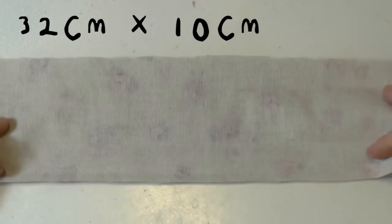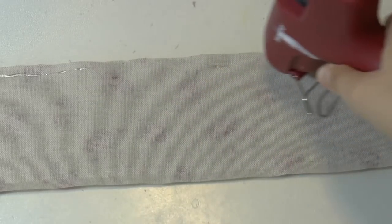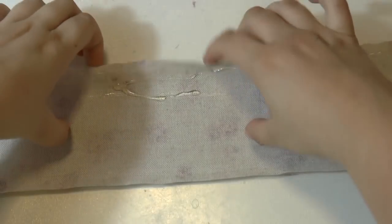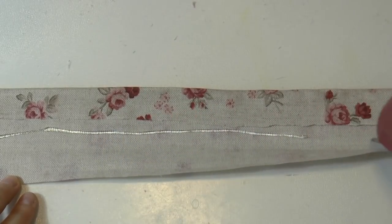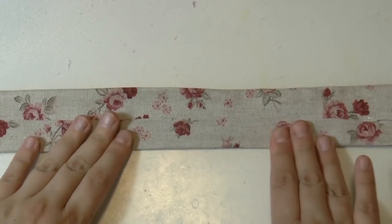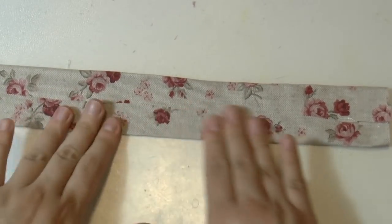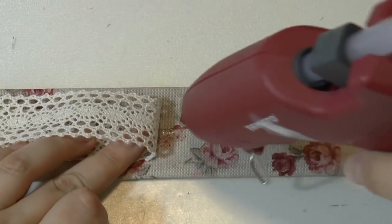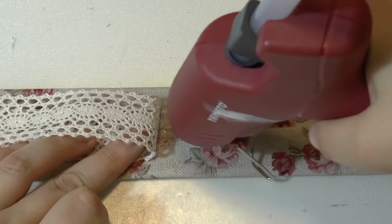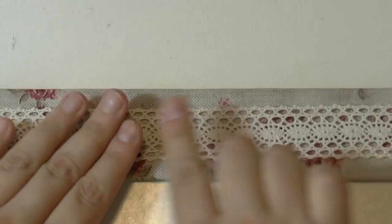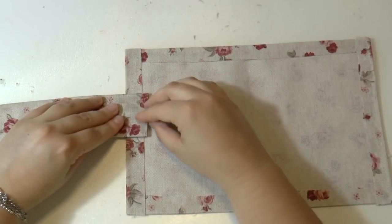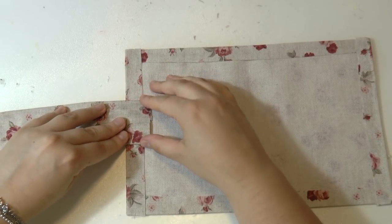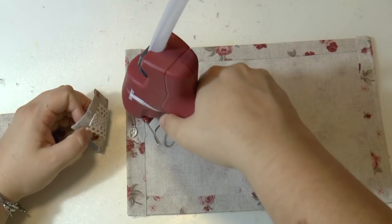Now take a strip of fabric 32cm long and 10cm wide and glue the edges towards the center. And you can leave that like so or decorate that. I decided to add some lace. Now glue that exactly in the middle of the shorter side of your fabric.